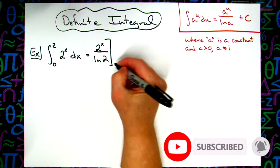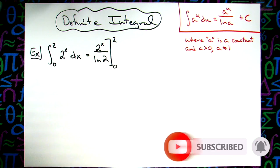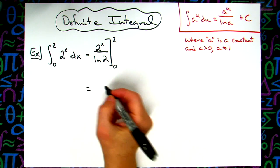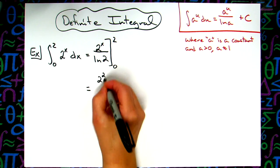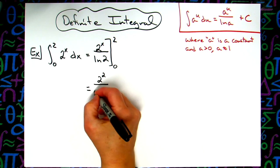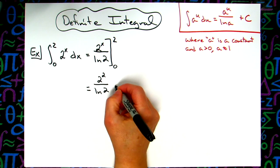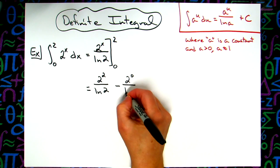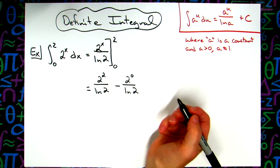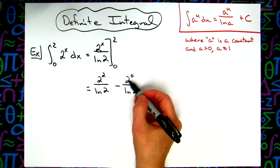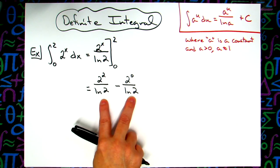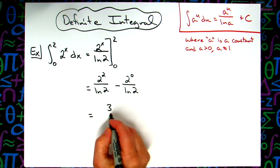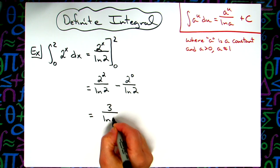Now I'm going to need to plug in the 0 and 2 to evaluate the limit. So when I do that I will have 2 to the 2 all over natural log of 2, and then minus 2 to the 0 all over natural log of 2. On top there we're going to have a 4, on top here we're going to have a 1. We already have common denominators, so 4 minus 1 on top is going to give me a 3 all over natural log of 2.